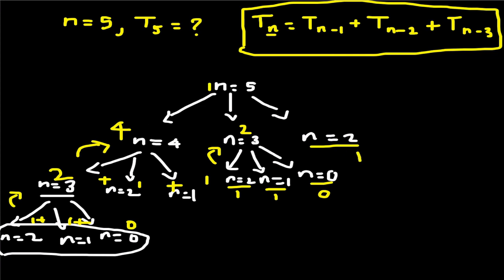So we will add 3 values to the root node n equal to 5: 4 plus 2 plus 1. We will add 7. So that is t of 5. If you look at this, we have the full recursive tree.